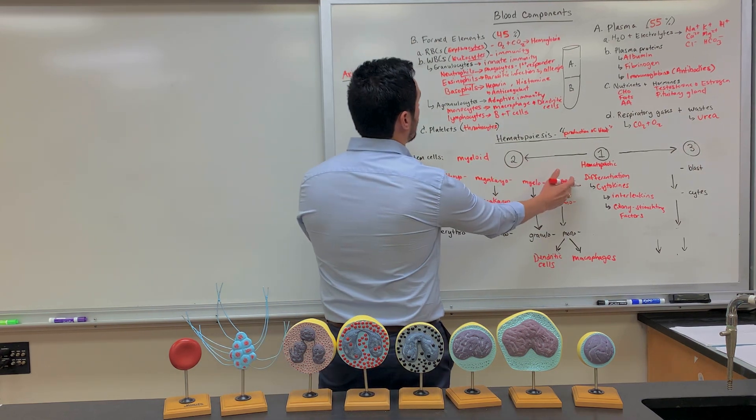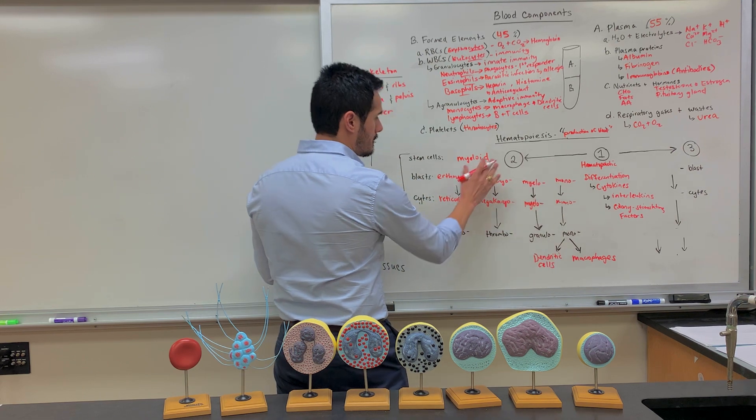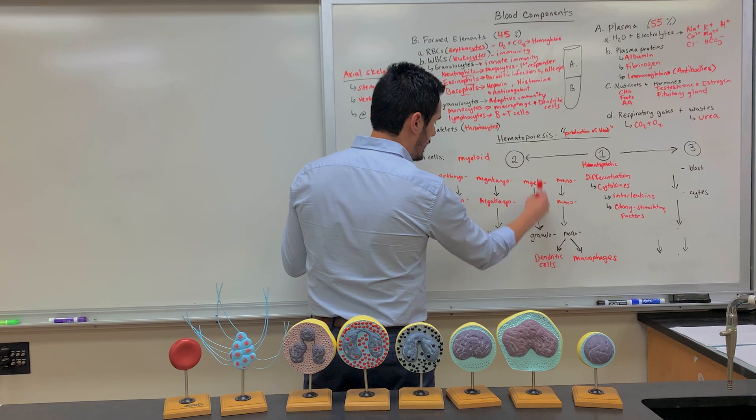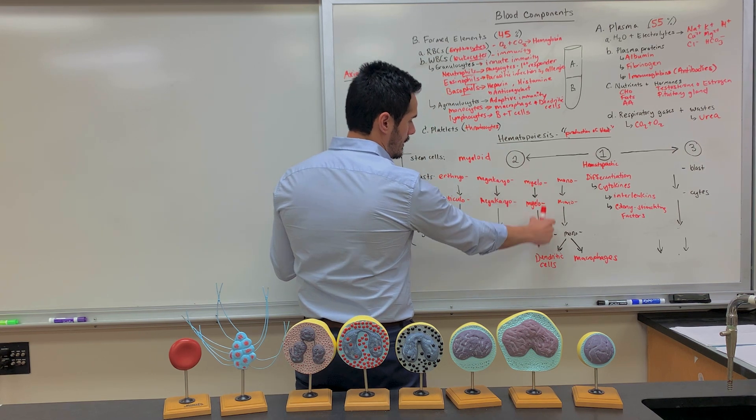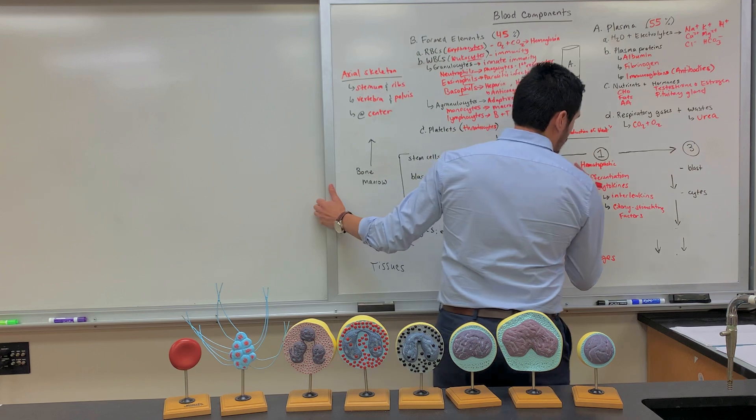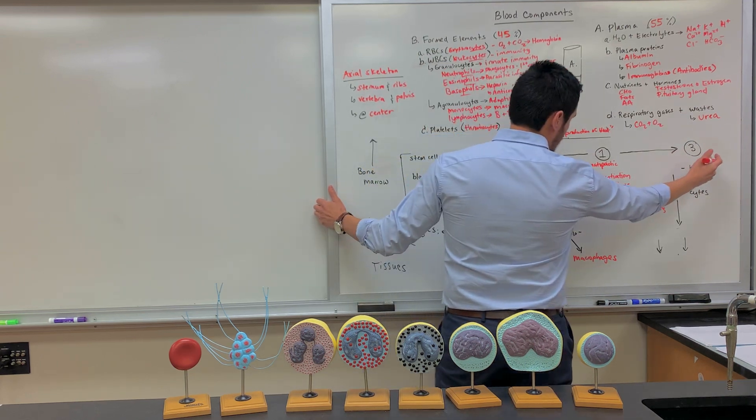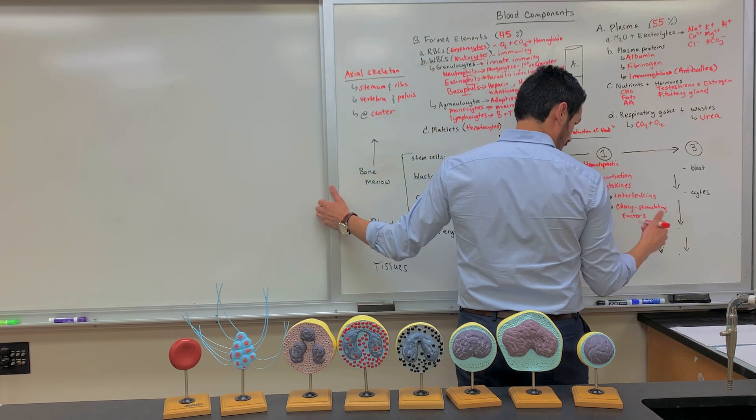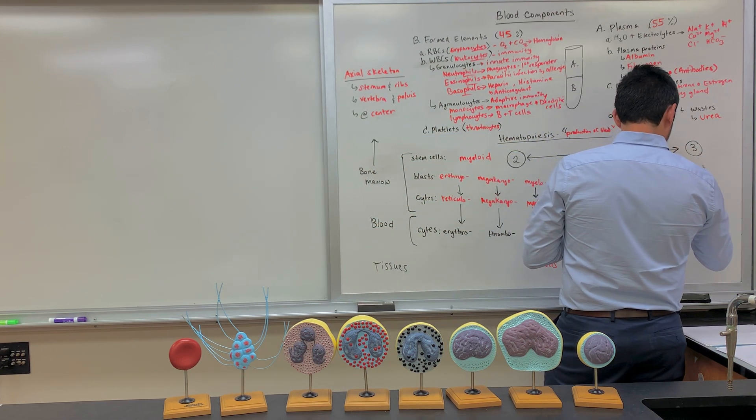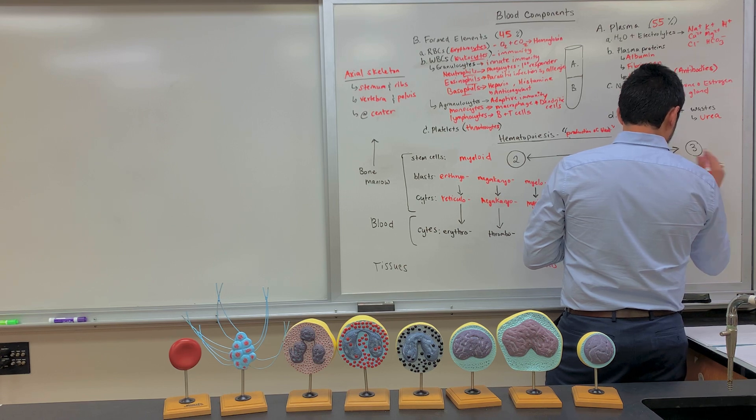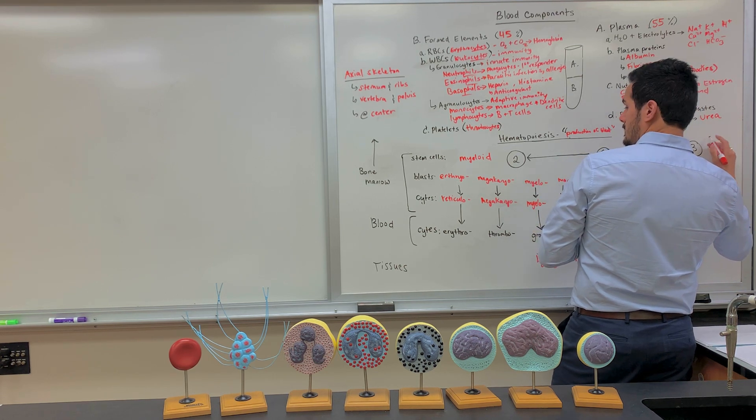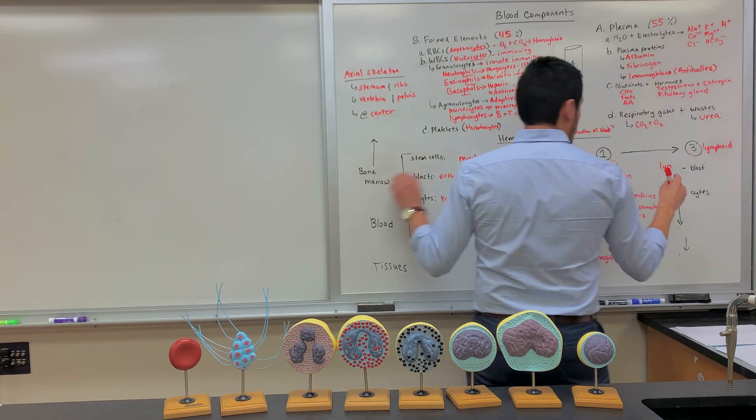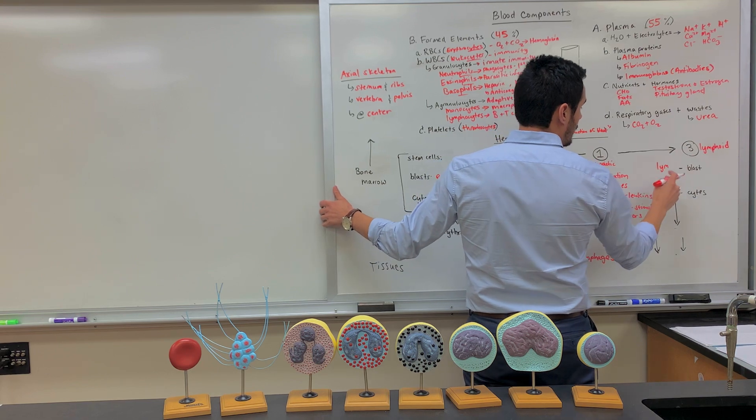Okay, so what we just talked about over here, once again, this is mainly associated, or this cell line here is mainly associated with innate immunity. I'm pointing this out because on this side, the hematopoietic stem cell will divide into what's known as a lymphoid stem cell.